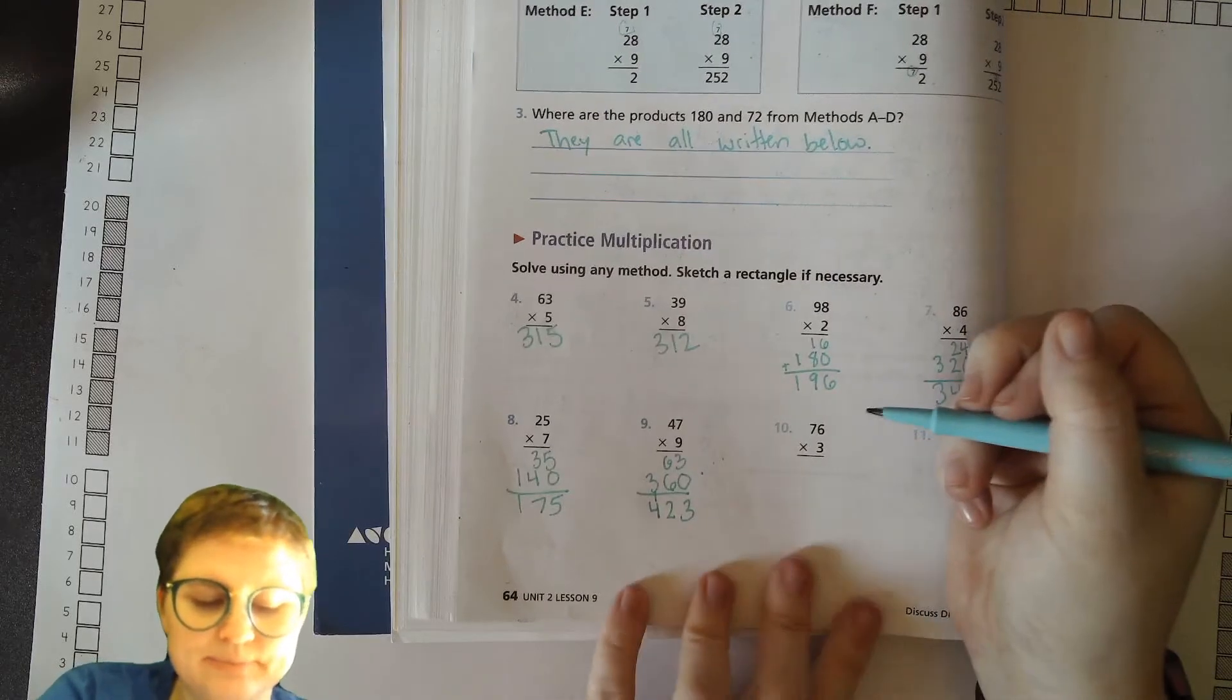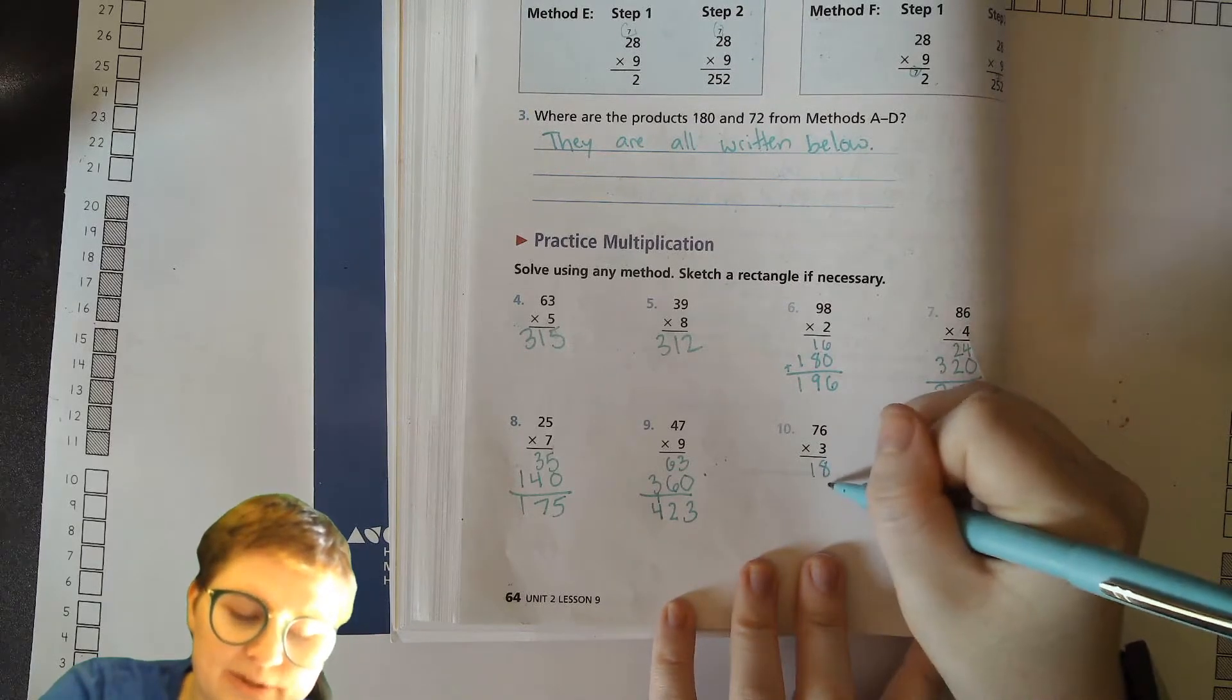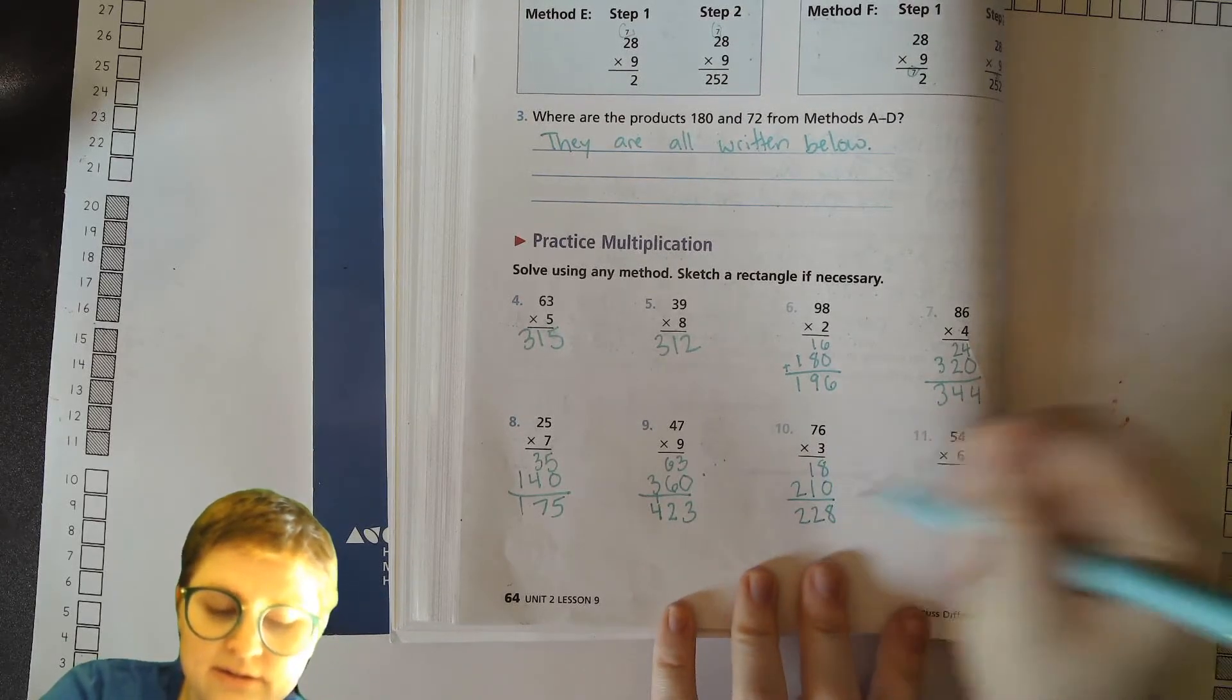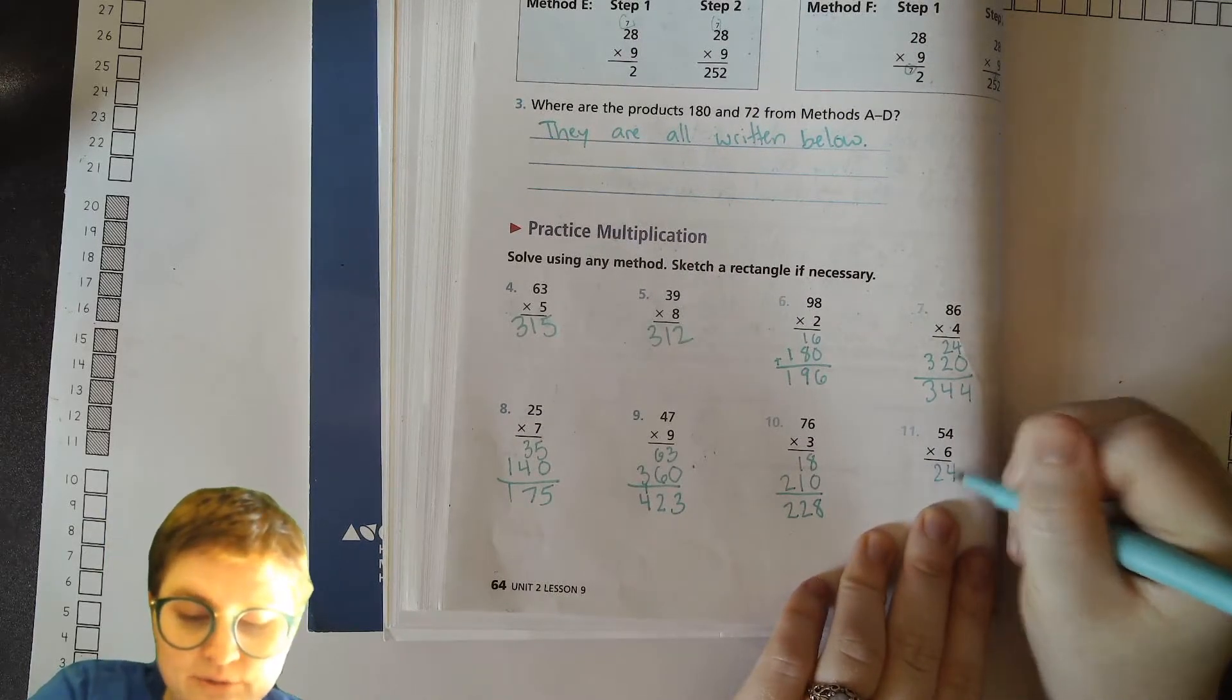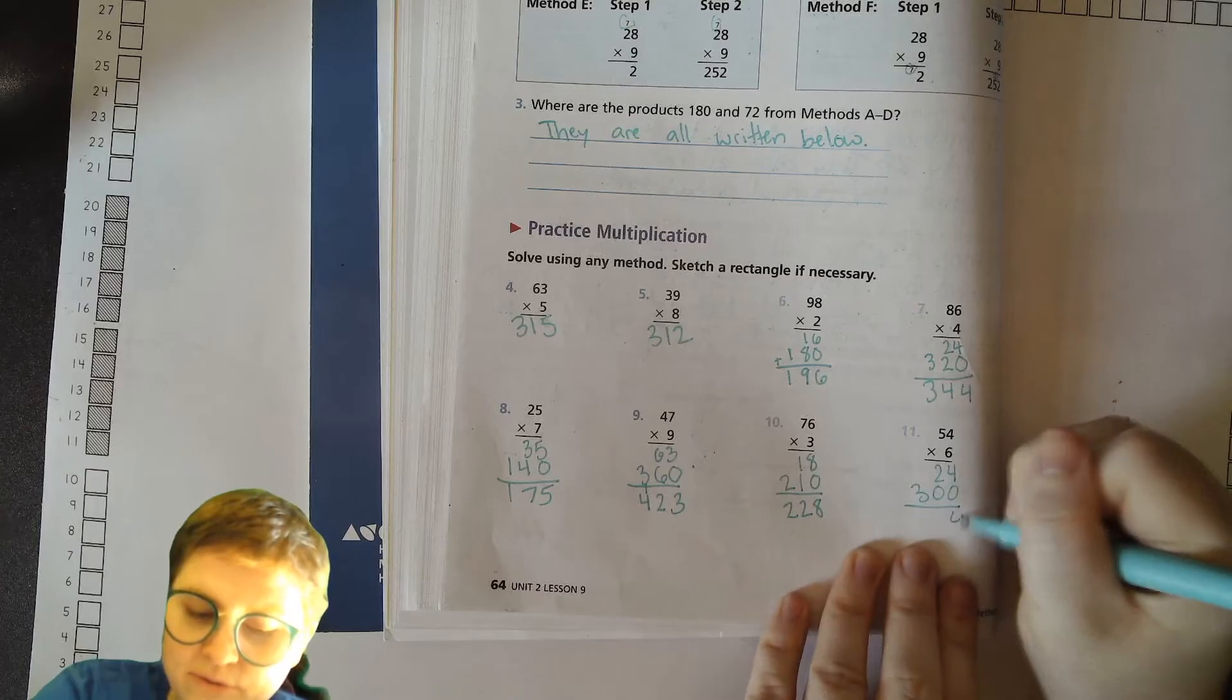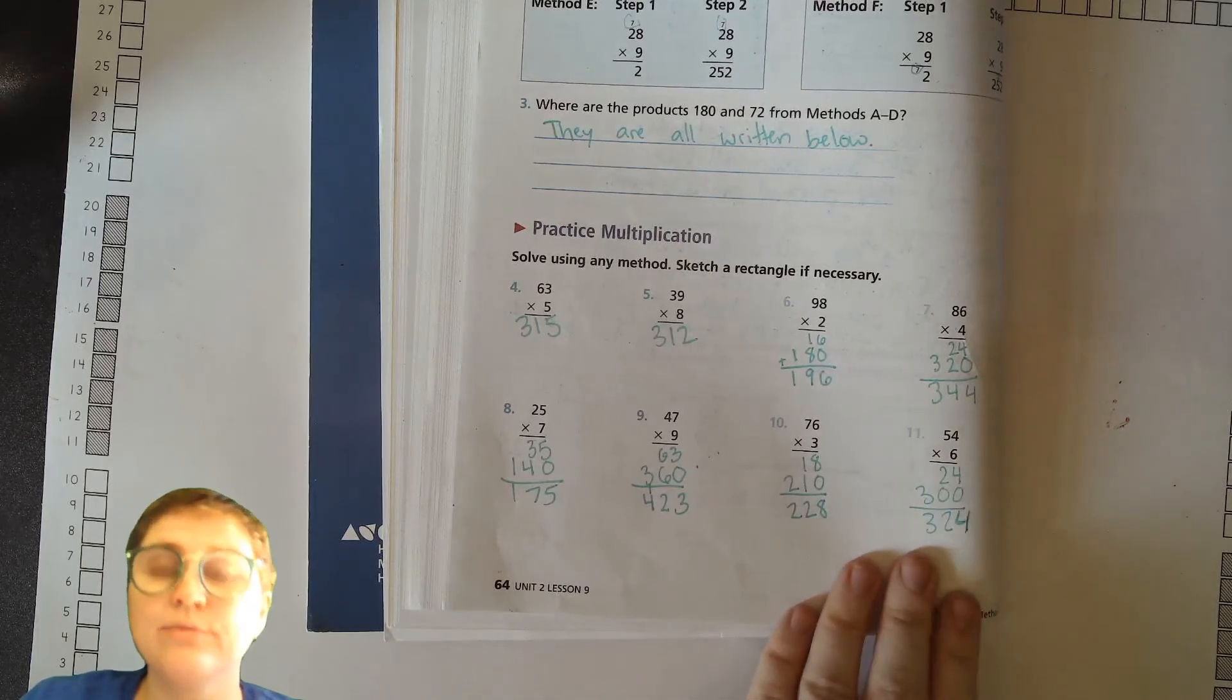423 on that one. 18 is 6 times 3, and then 3 times 70 is 210. Okay, 6 times 4, 24. 6 times 50, 300. 4, 2, 3, 324.